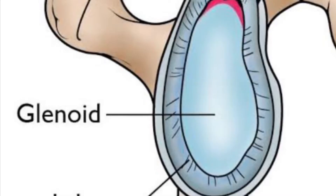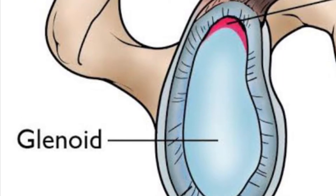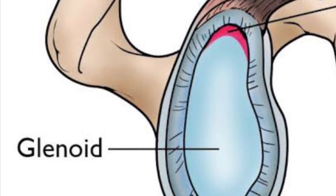A Paralabral cyst, as the name suggests, is a cystic swelling inside the shoulder around a particular structure called the labrum. Labrum is a soft tissue ring-like structure around the glenoid or the socket. This picture shows the socket — that's the glenoid and the labrum around it.